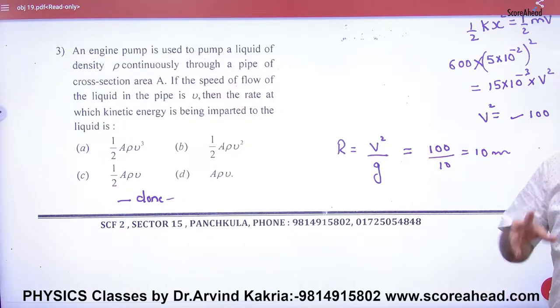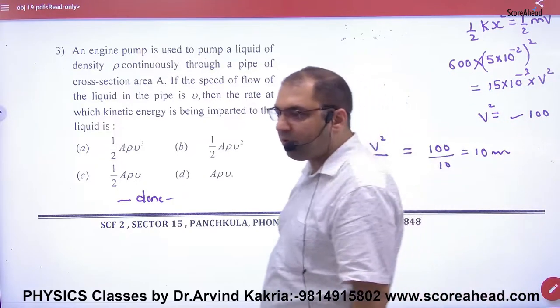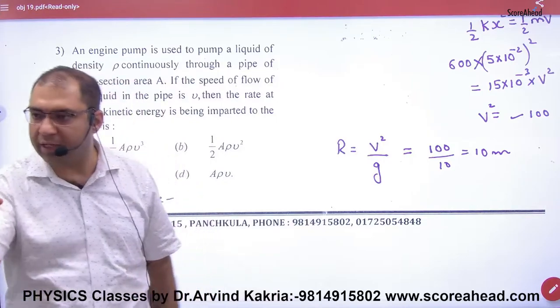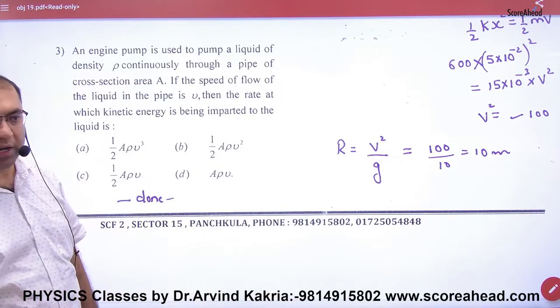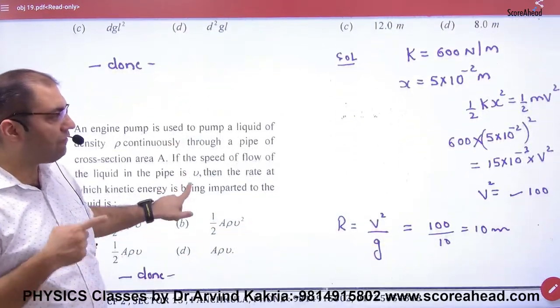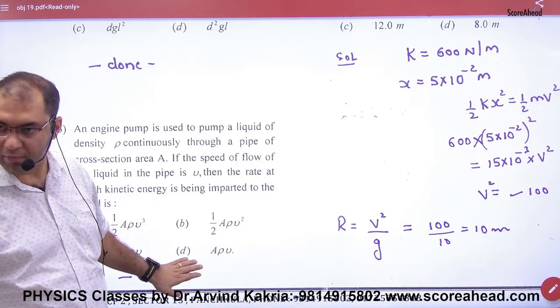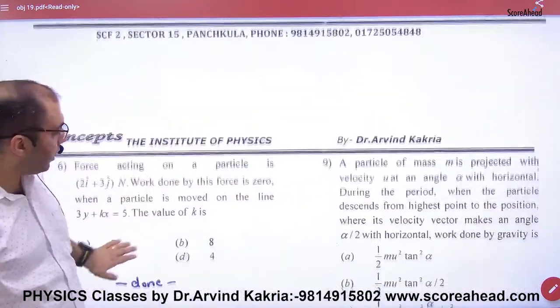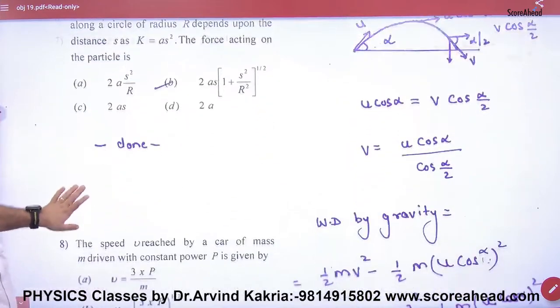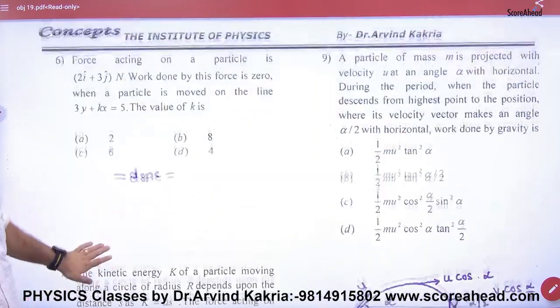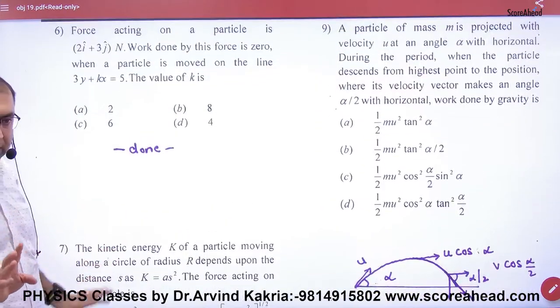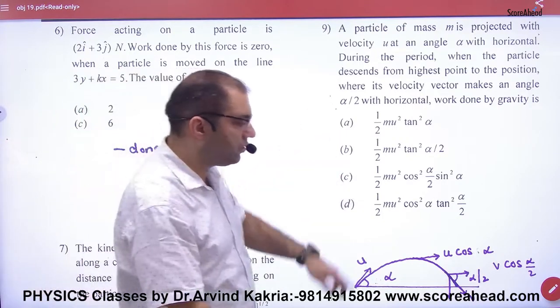Maximum range is equal to v square by g. So v we have removed, and we know the answer. What is the point that we have to solve the problem? The maximum range is v square by g, but for the velocity you have to calculate the velocity by half k x square equals half mv square rule. Clear, as we have done.